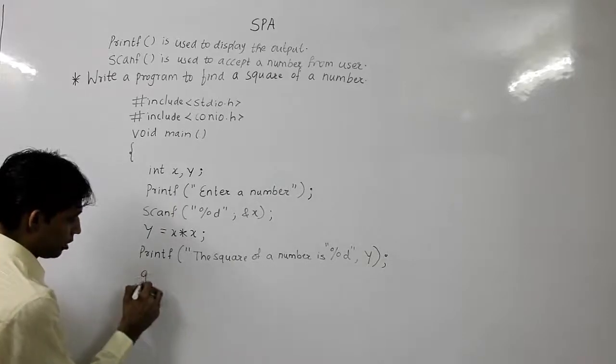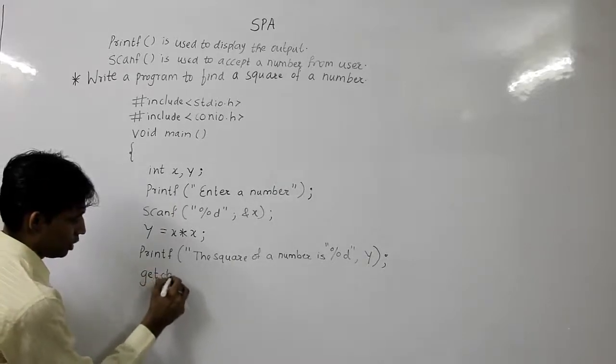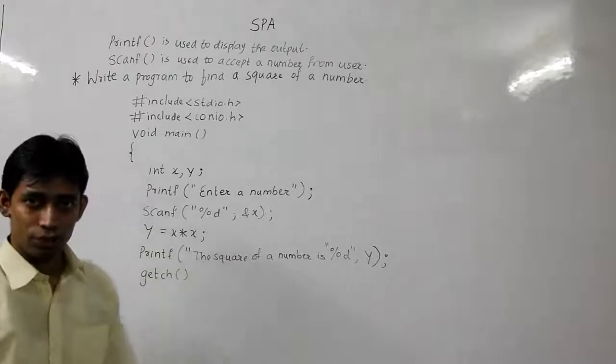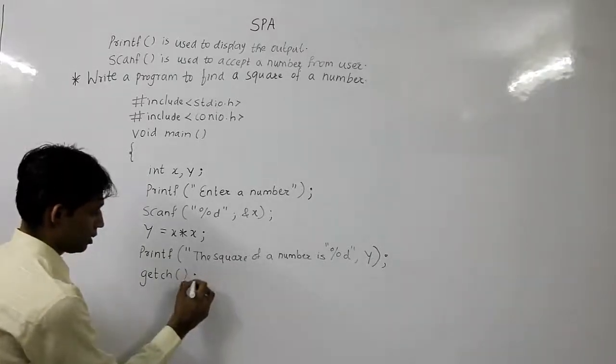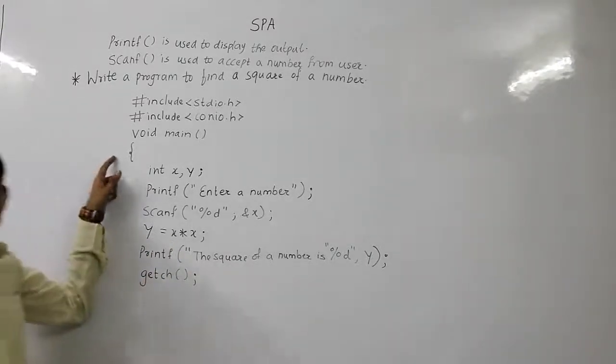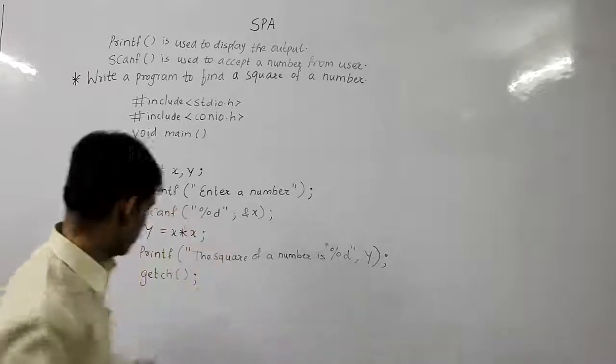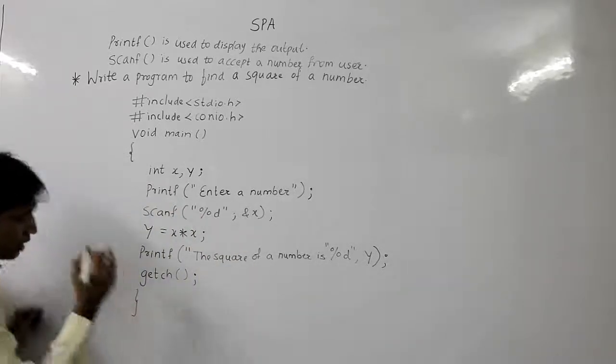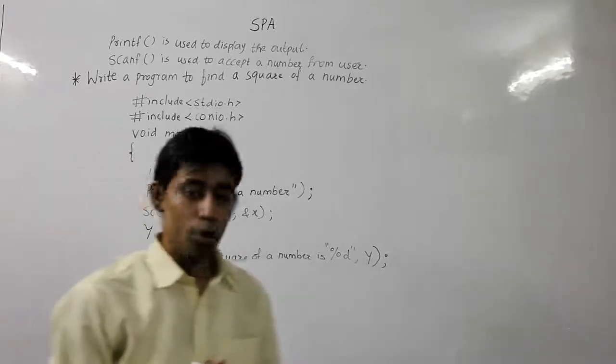Then, I am writing a new function, which is getch. Again, a semicolon. And, since I have opened up here, I need to close it. I have closed that. This completes your program.